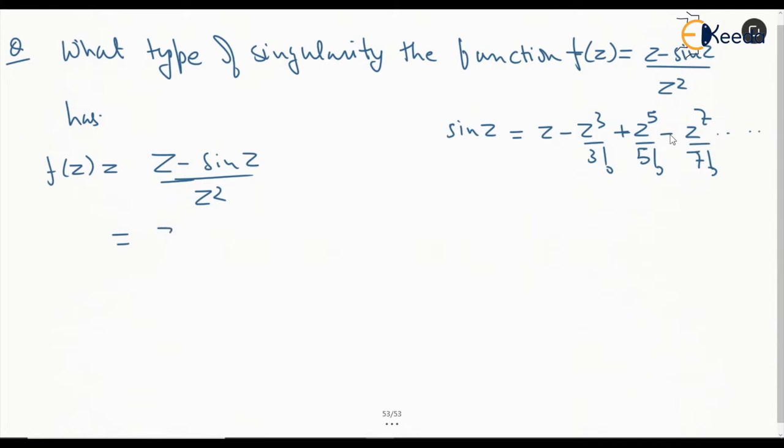This can be written as z minus z minus z cube by 3 plus z to the power of 5 by 5 factorial minus z to the power of 7 by 7 factorial and so on divided by z square.